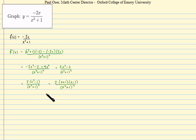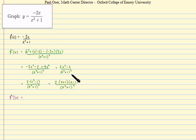Now we turn our attention to the second derivative. To find the second derivative, we take the derivative of the first derivative. Which expression we use is up to us — this one is particularly suited to an easy calculation since the numerator is just a nice small polynomial. Just remember the second derivative ultimately needs to be in completely factored form.